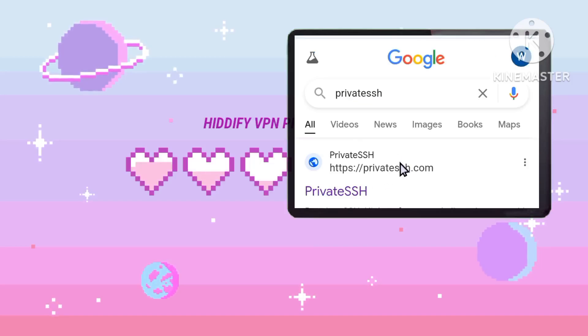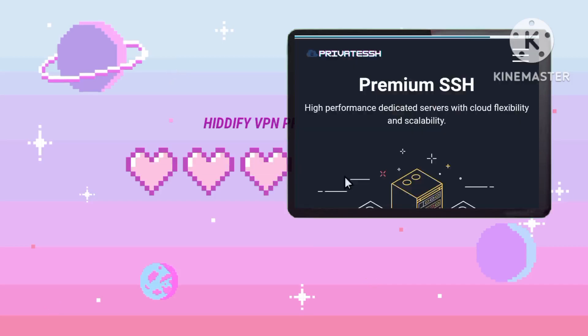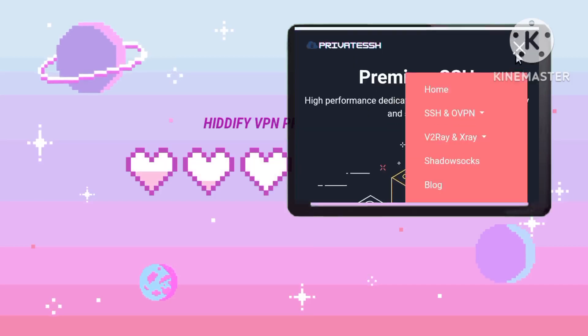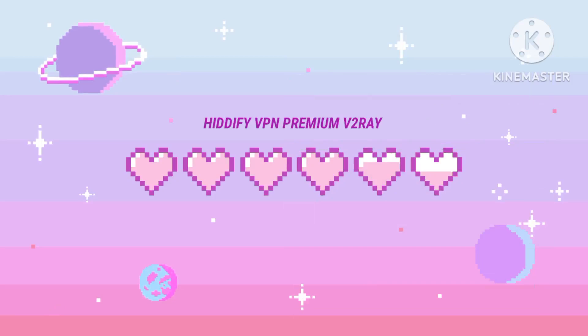Step two: once you're on the site, navigate to the menu by tapping on the three horizontal lines in the top corner. This will unlock a range of options essential for your setup.